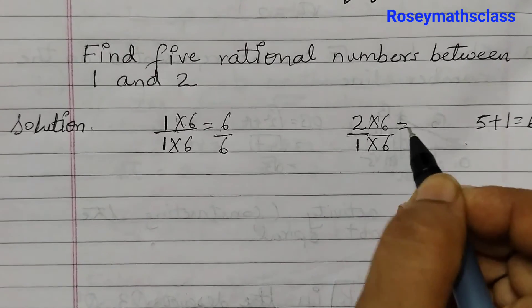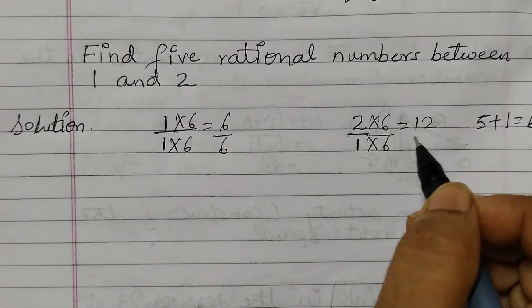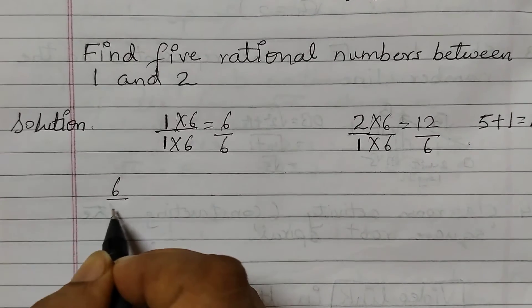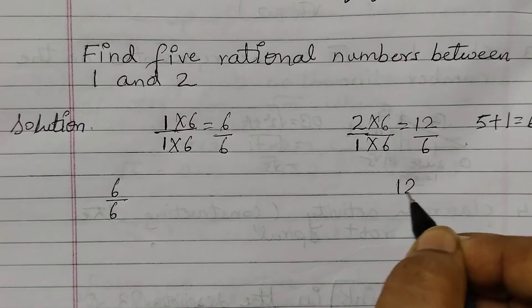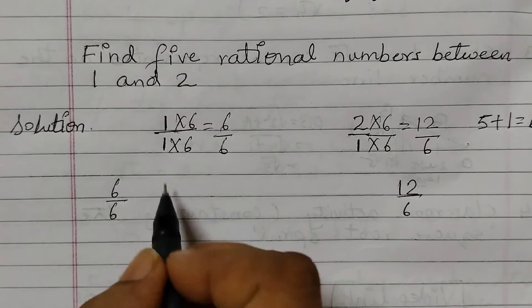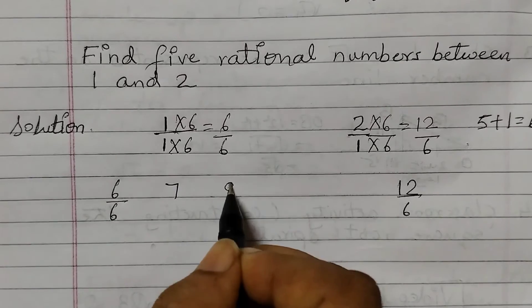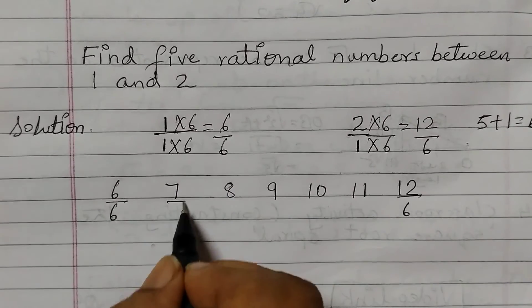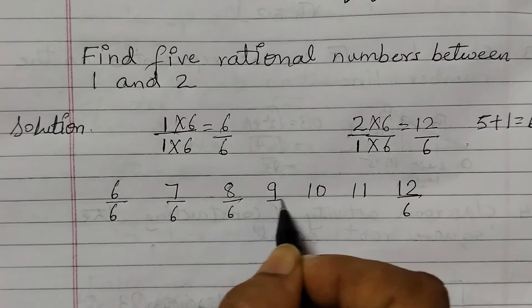Similarly here, 2 times 6 is 12 and 1 times 6 is 6. Now we need to find the 5 numbers between these 2 numbers. So here, 6, then we have 7, 8, 9, 10, 11, and the denominator is 6.